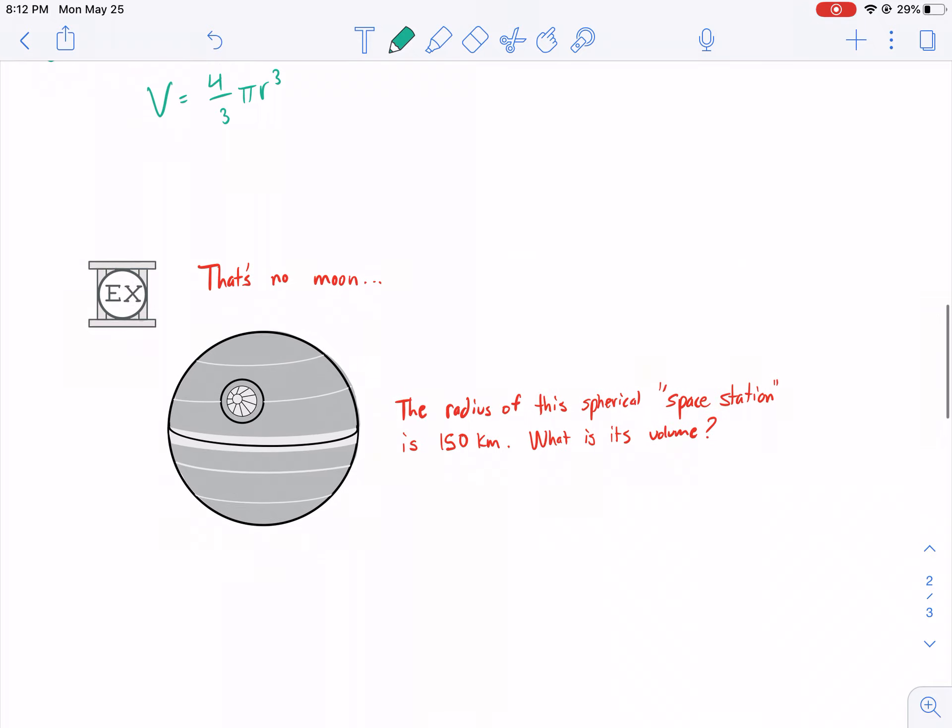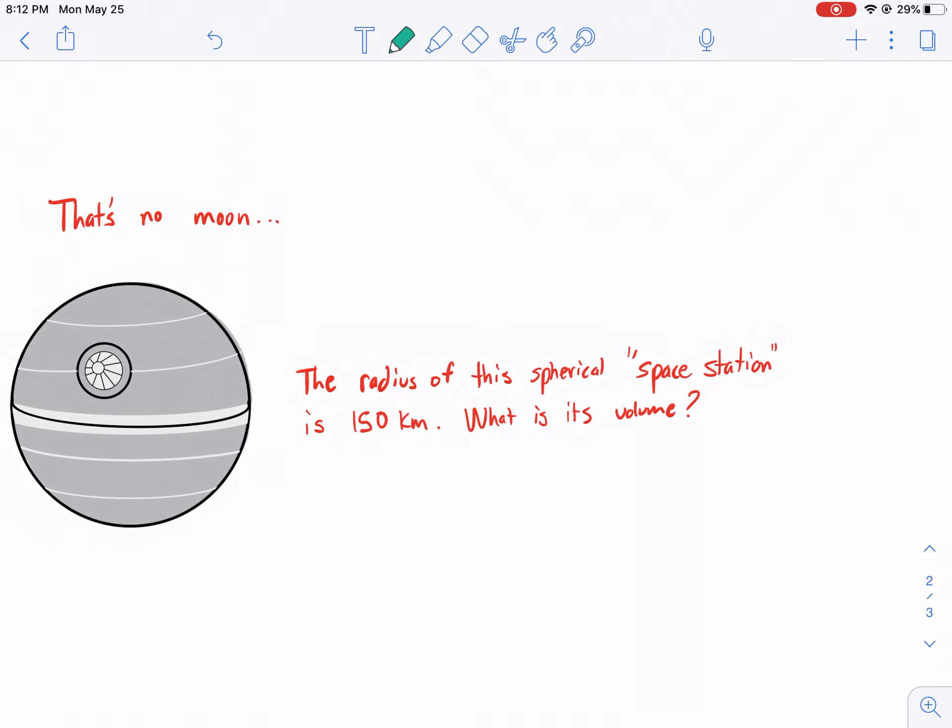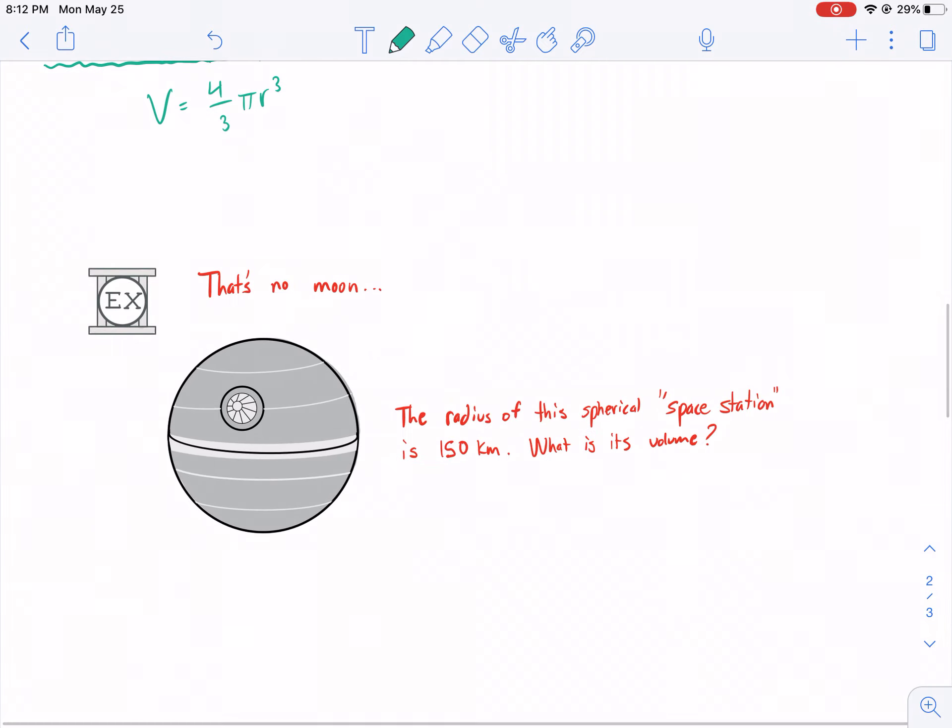Hopefully we have some Star Wars fans. That's no moon is the setup. The radius of this spherical space station is 150 kilometers. What is its volume? So that's actually accurate compared to what the movies portray. So let's go ahead and plug that in. We're just going to be copying this formula.